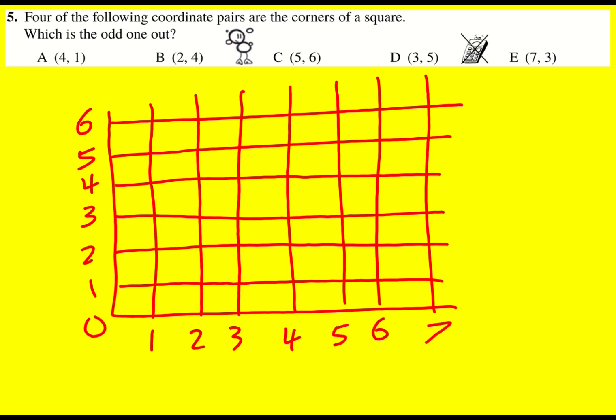And then I'm going to plot the coordinates. So we've got 4,1, we've got 2,4, we've got 5,6, 3,5, and 7,3.